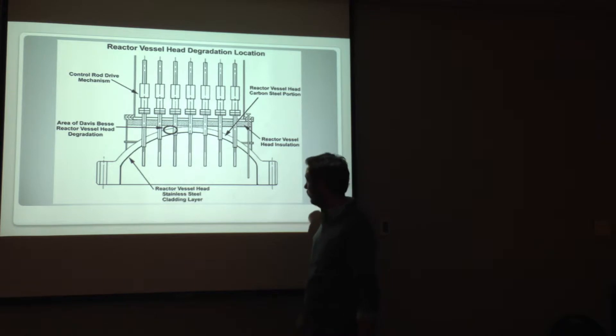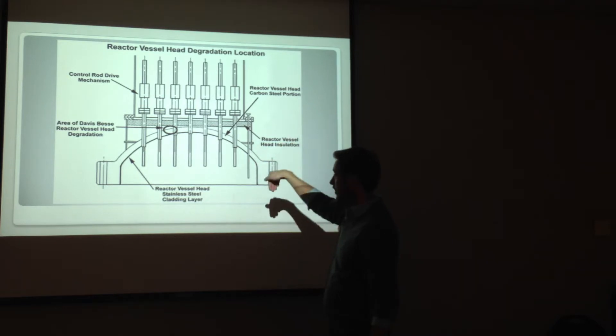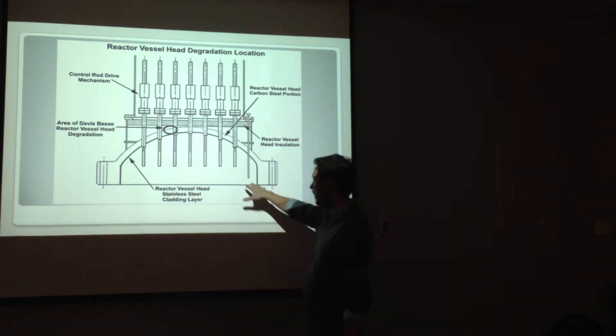This is basically a diagram of what the reactor pressure vessel head looks like. On the top of these are your control rod drive mechanisms. They penetrate into the top of the head. Inside here is your primary system with your primary coolant containing the boric acid.